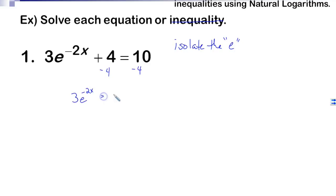For those of you that don't know what the word isolate means, isolate means get by itself. 10 minus 4 is 6, divide by 3, and we get e to the negative 2x equals 2. Now that we get to this part, that was step one. Step two: when we get to this part, we're going to take the natural log of both sides.